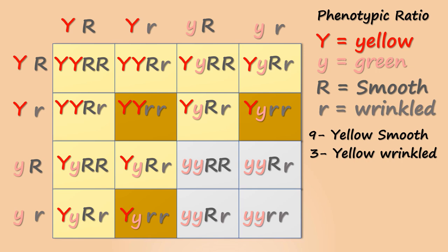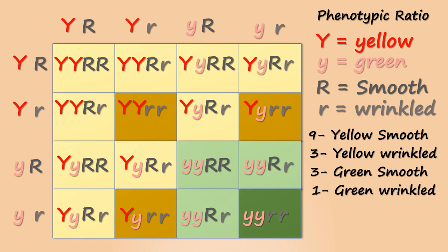The gametes with both small y but at least one capital R will show green smooth seeds. Since there is no capital Y, small y which is the recessive allele will get expressed and will show the green phenotypic character, and since capital R is present, the seeds will be smooth. And the gametes having both small y and small r will show the recessive green wrinkled phenotype. So overall the final ratio becomes 9 is to 3 is to 3 is to 1.